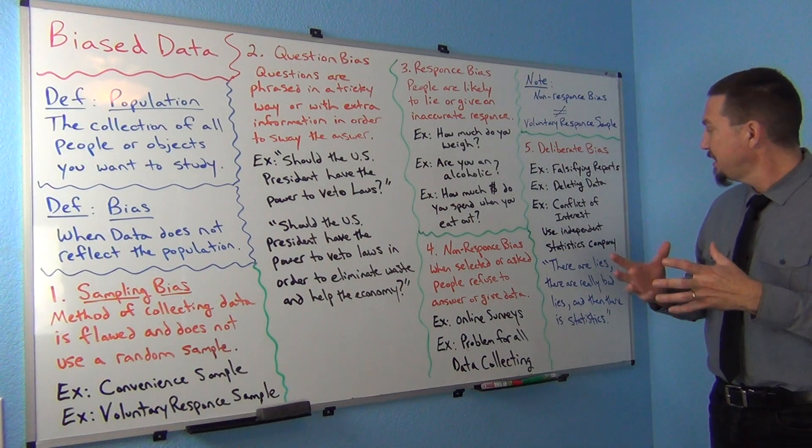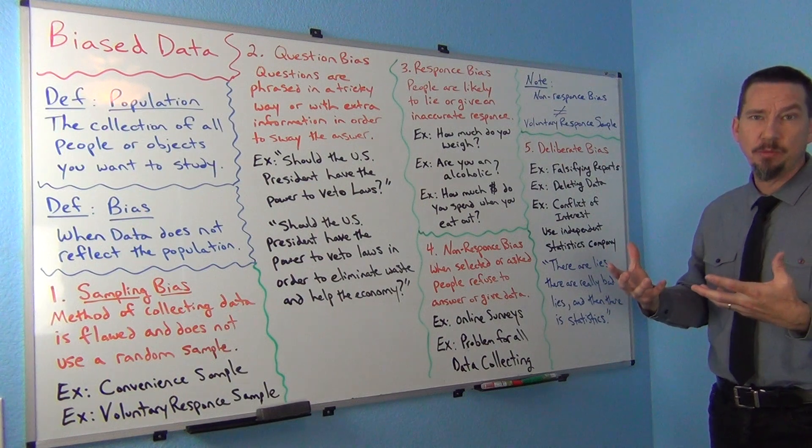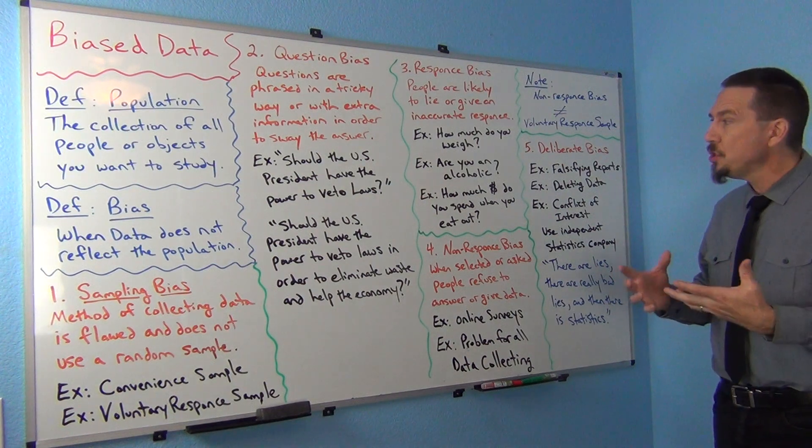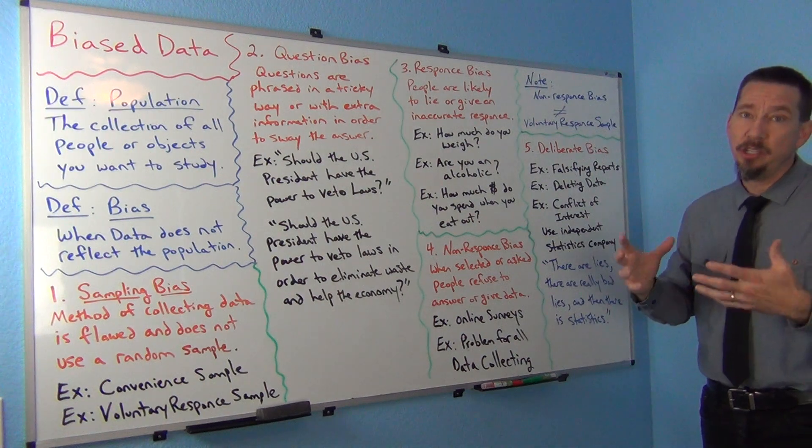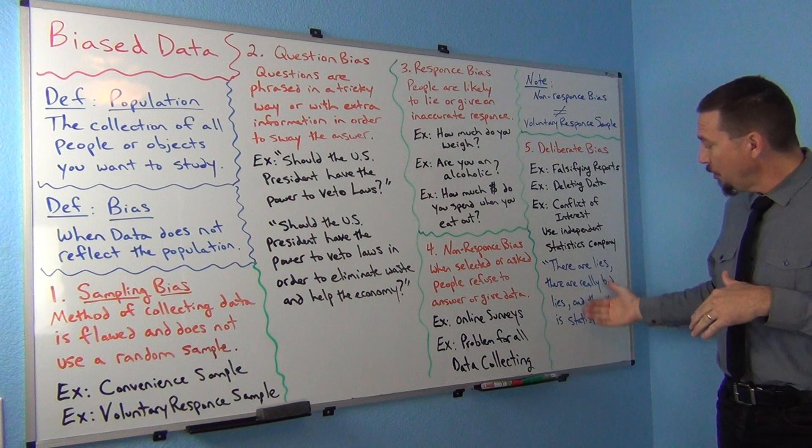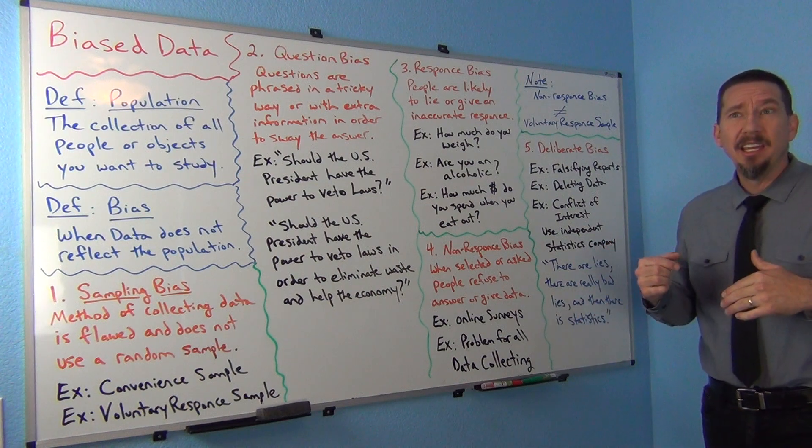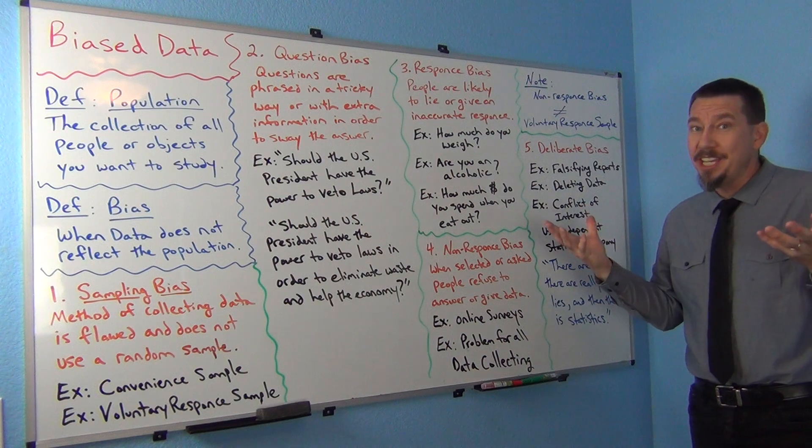The data scientist, the person working with the data really has to have good ethics when they're doing this. And for the most part, the data science community and statistics community do have really good ethics. I tend to see these more just occasionally, but you have to be watching out for it.